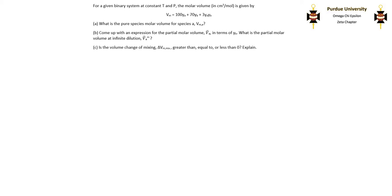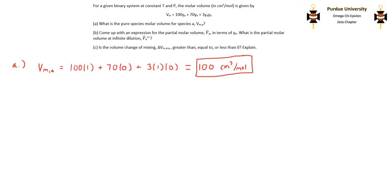In part A, it asks us what is the pure species molar volume for species A. To find this, all we have to do is solve the molar volume of the mixture where YA is equal to 1 and YB is equal to 0. If we plug that in, we get that the pure species molar volume for species A is 100 centimeters cubed per mole.